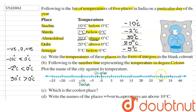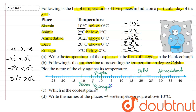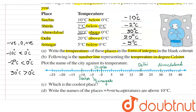Delhi is 20 degrees above zero, integer value 20, so we mark Delhi at positive 20 on the number line. Srinagar is 5 degrees below zero, integer value minus 5, so we mark Srinagar at minus 5. This completes our number line representation.